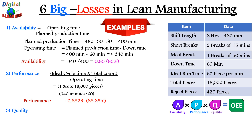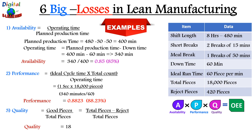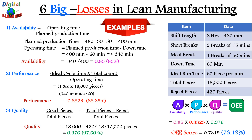The next loss is calculated in terms of quality. Quality = good pieces ÷ total pieces. Good pieces = total pieces minus rejects = 18,000 − 420. Putting the numbers into the formula, quality is 97.6%, meaning approximately 2.5% is your quality loss — due to scrap or rework. We can also calculate the overall OEE: combining all three factors gives an OEE score of approximately 73.19%, meaning roughly 27% is your overall loss.